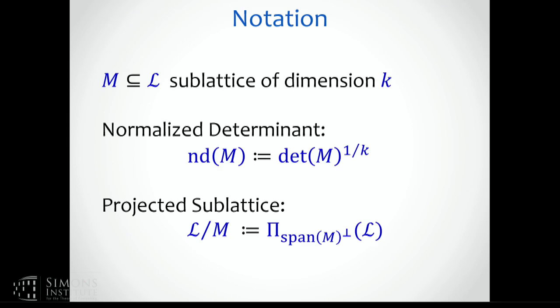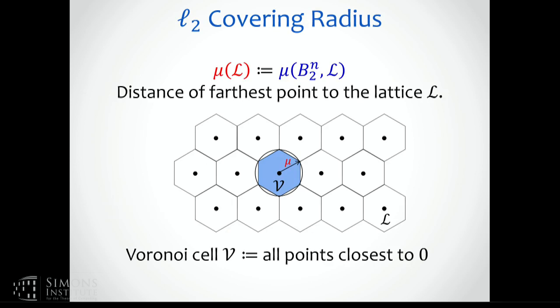Some notation: if I have a sub-lattice of dimension k, I'll write nd for the normalized determinant — I don't want to normalize by 1 over k everywhere. If I have a sub-lattice, I'll use this notation to denote projecting L orthogonal to the span of the sub-lattice. We have our covering radius, and I want to get you to how you get lower bounds based on volumes of projections.